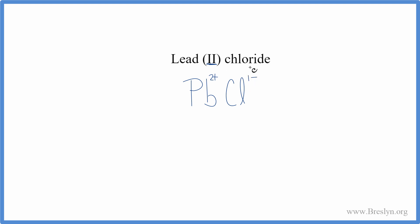Since lead(II) chloride is a neutral molecule, these charges need to add up to zero, and they don't right now. We can use the crisscross method to change the subscripts here to make them add up to zero. We move the one here, we move the two here.